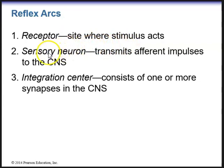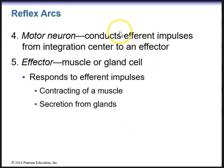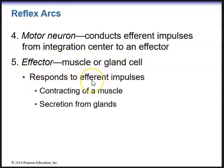The sensory neuron — the afferent neuron — transmits afferent impulses to the CNS. Then it hits the integration center, which consists of one or more synapses in the CNS where the information is processed. It then provides an appropriate motor response — the motor neuron conducts efferent impulses from the integration center to an effector muscle or gland, which will either contract a muscle or secrete from glands.